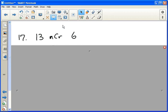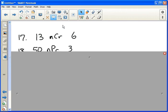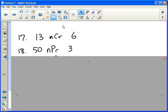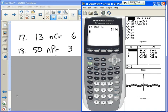So this is a permutation. We would use 50 nPr 3, because there are 50 people and we're going to choose three of them in a specific order. So 50, math, probability, nPr 3. That's 117,600.